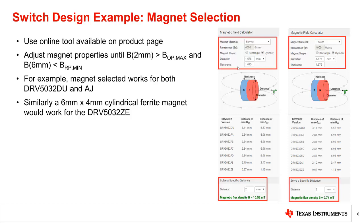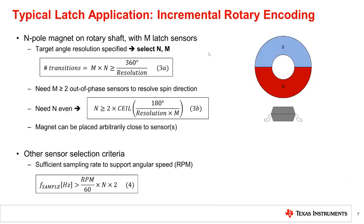Hall effect latch sensors are predominantly used for encoding rotary and other types of periodic motion. Incremental rotary encoding is used to resolve changes in the angle of a rotating shaft. A magnet fixed to the rotating shaft converts angle information into a rotating magnetic field, which changes polarity and magnitude as it rotates. A latch sensor placed near the rotating magnet converts the field polarity changes to a pulse train.